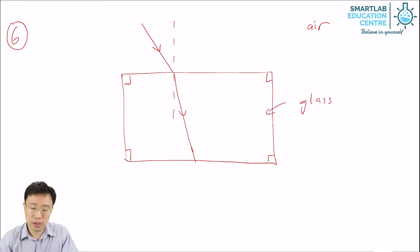Now, once it reaches the other separation, glass and air, this time it is traveling from glass, which is optically denser, to air, which is optically less dense. And so it will bend away from the normal.